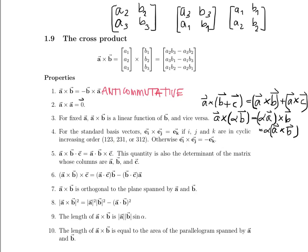Property 6: A crossed with B and then crossed with C — note there is grouping here — equals A dotted with C times B minus B dotted with C times A. This you can actually prove by brute force, writing out things with components and calculating them. It's a bit long-winded, but it definitely works out in the end.